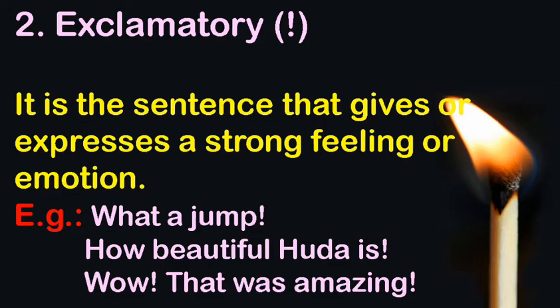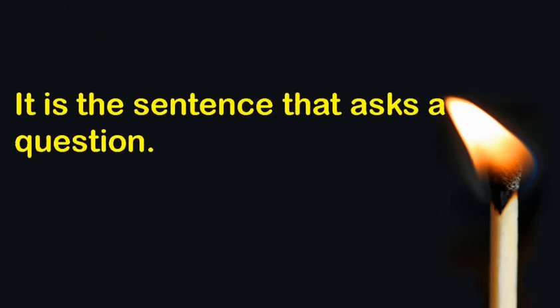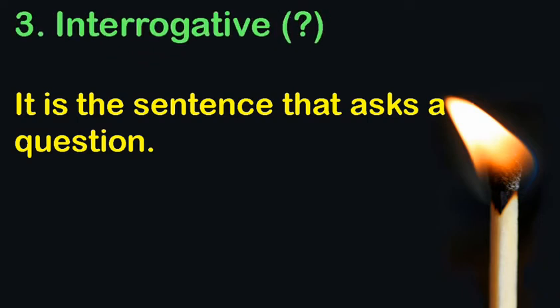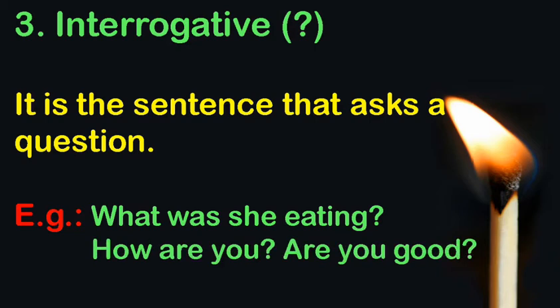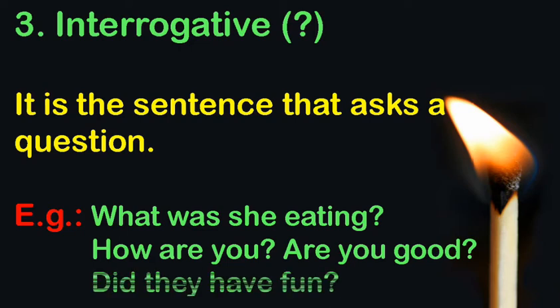The third type is the interrogative sentence — it asks a question. Interrogative sentences always end with a question mark. For example: 'What was she eating?' 'How are you?' 'Are you good?' 'Did they have fun?' — these are all interrogative sentences because they are questions.